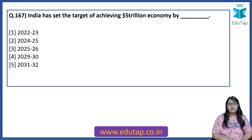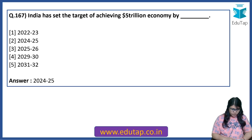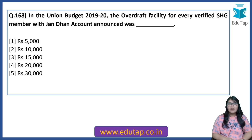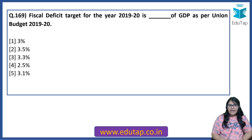India has set the target of achieving a $5 trillion dollar economy by which year? The answer is 2024-25. As per the Union Budget 2019-20, the overdraft facility for every verified self-help group member under Jan Dhan accounts announced was 5,000 rupees. The fiscal deficit target for 2019-20 is 3.3% of GDP as per the Union Budget 2019-20. These targets — fiscal deficit, revenue deficit, effective revenue deficit — are all very important.